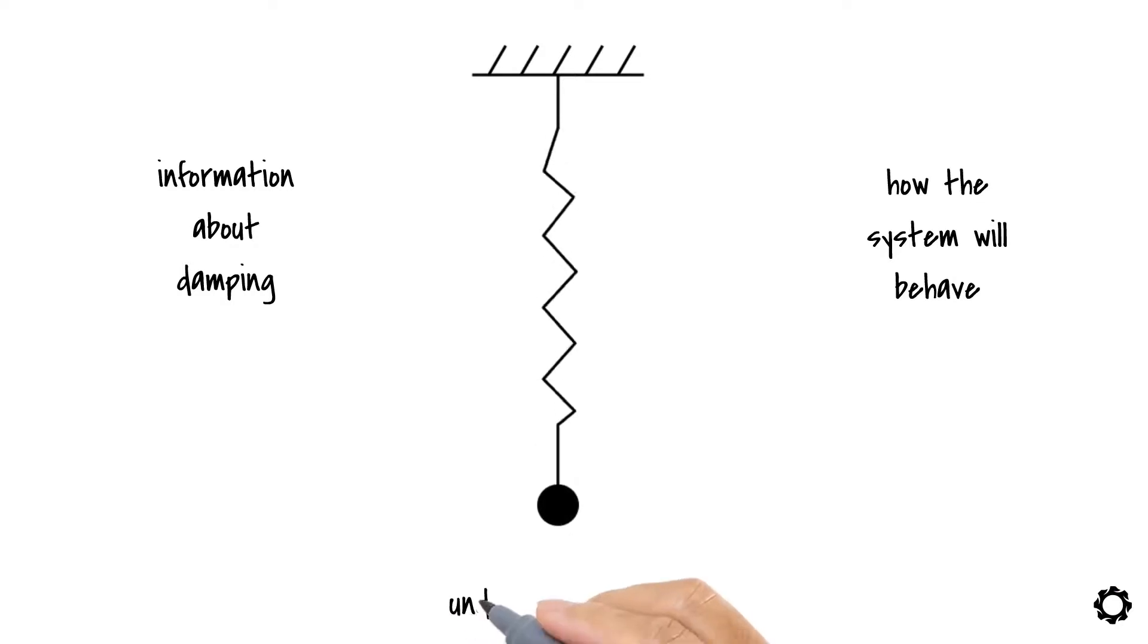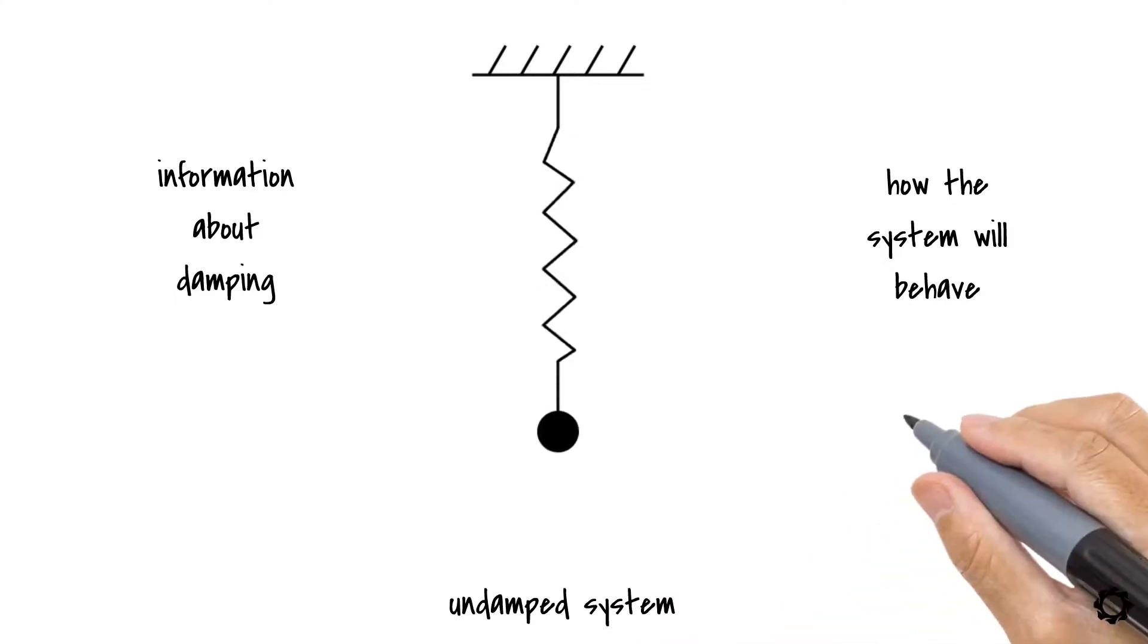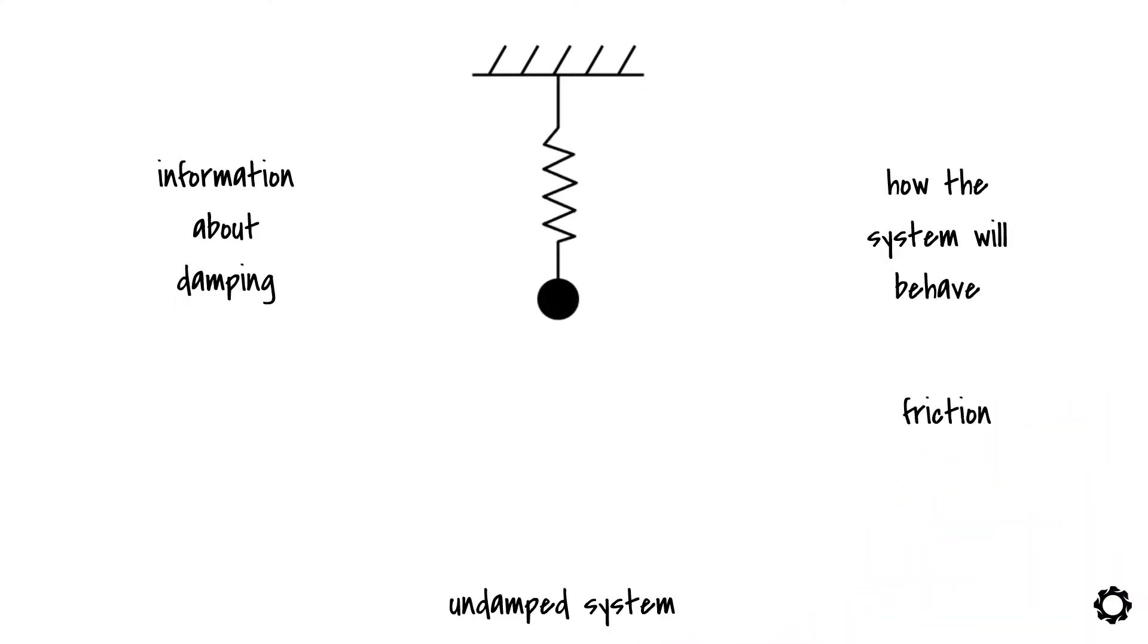If we have an undamped system, then this friction that could stop the movement of the body is inexistent, causing the body to keep moving and moving and moving. Okay, I think I need some damping, but you got it.